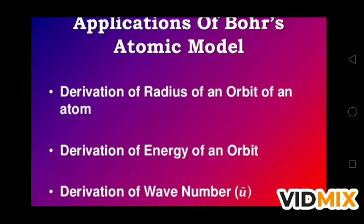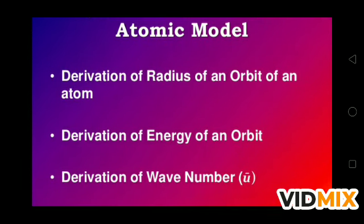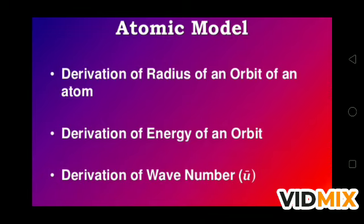The applications of Bohr's atomic model include deriving the radius of an orbit, the energy of an orbit, and the wave number. These are three important derivations we will learn in upcoming videos. In this video we have covered Bohr's concept of fixed energy levels and improvements over Rutherford's model. In the next video we will discuss the derivation of the radius of an orbit, the energy of an orbit, and the wave number. Till then, have a nice day.